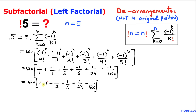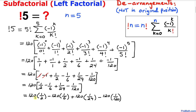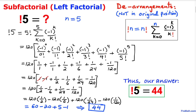Simplifying those fractions, we get one over one, negative one over one, one over two, negative one over six, one over 24, and negative one over 120. The positive one and negative one cancel. Distributing 120 across each fraction gives: 60, minus 20, plus 5, minus 1, which totals 44. So the sub factorial of 5 is 44. Thanks for watching — please subscribe for more videos!